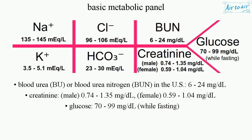Blood Urea (BU), or Blood Urea Nitrogen (BUN) in the U.S., 6–24 mg/dL; Creatinine: male 0.74–1.35 mg/dL, female 0.59–1.04 mg/dL; Glucose: 70–99 mg/dL while fasting.